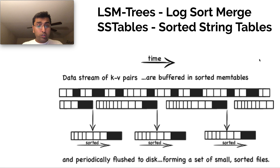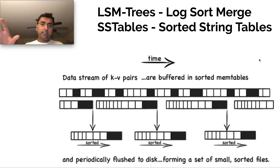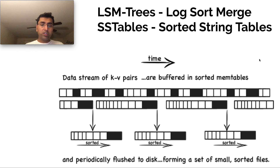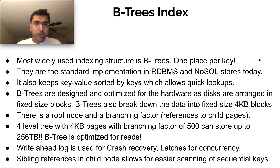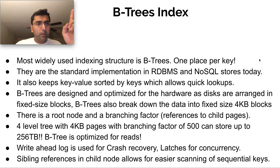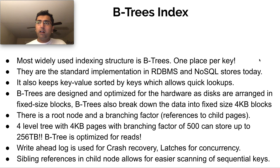LSM trees use disk in a way that optimizes heavily for writes. The process starts with memory, then goes to the compacted version on disk if not found, and uses mechanisms like bloom filters to check whether keys exist to avoid thrashing. B-trees can be thought of as the most widely used. The beauty of B-trees is that each key is placed at only one place in the B-tree implementation, and it's optimized with a different philosophy — it does have keys sorted by keys, like LSM trees.